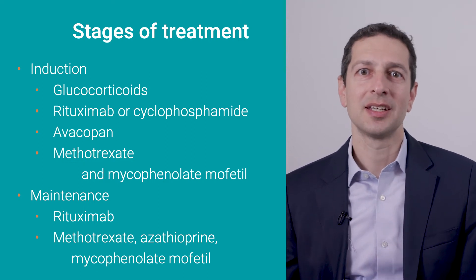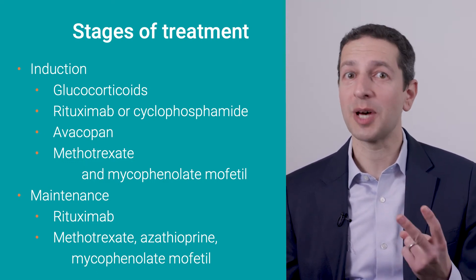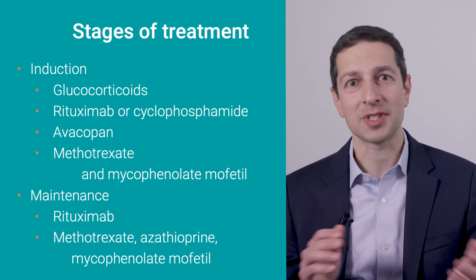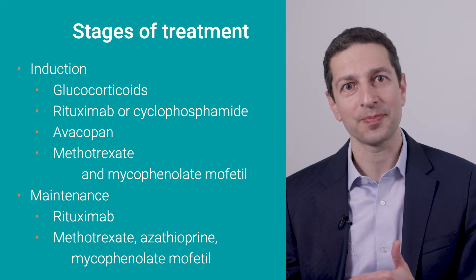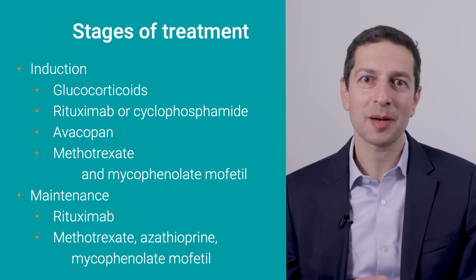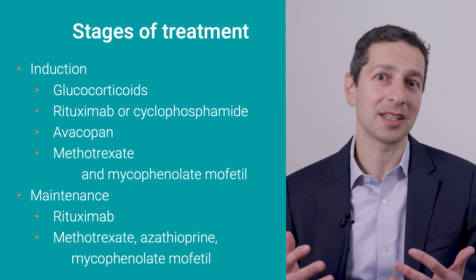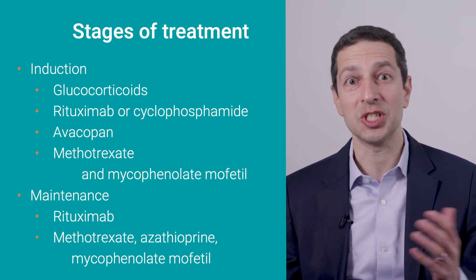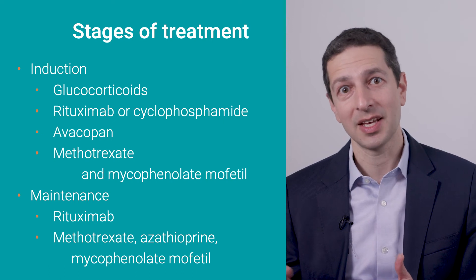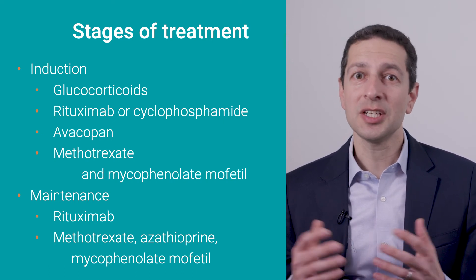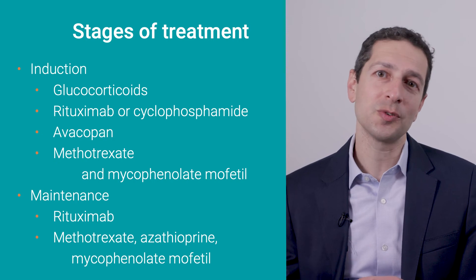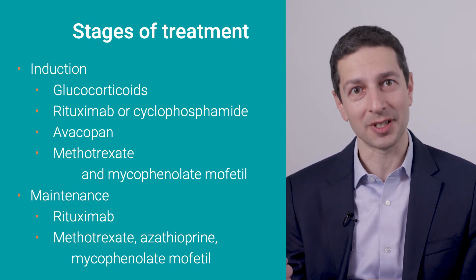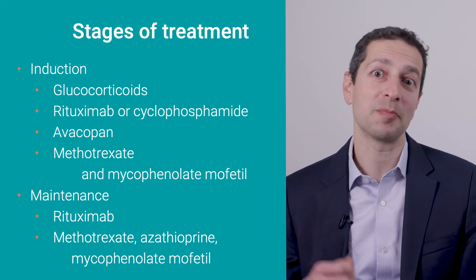Typically, treatments used for induction are two medicines: steroids like prednisone, and either rituximab or cyclophosphamide. There's a new medicine called avacopan that may have a role in limiting or reducing the use of prednisone in GPA and MPA. And in eGPA, all of those treatments are used, but there are also more targeted treatments at the eosinophil specifically, like mepolizumab.